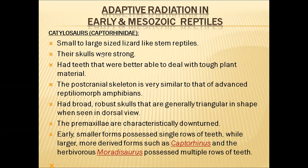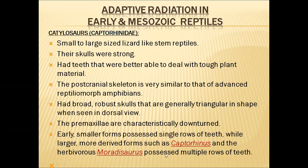The primitive cotylosaurs had very strong skulls with teeth better able to deal with tough plant materials — they were herbivores. Their post-cranial skeleton is very similar to that of the advanced reptileomorph amphibians. They had a broad, robust skull, usually triangular in shape when seen from a dorsal view. The maxillae were characteristically downturned. Early smaller forms possessed a single row of teeth, while later larger forms like captorhinids — such as Moradisaurus — possessed multiple rows of teeth.